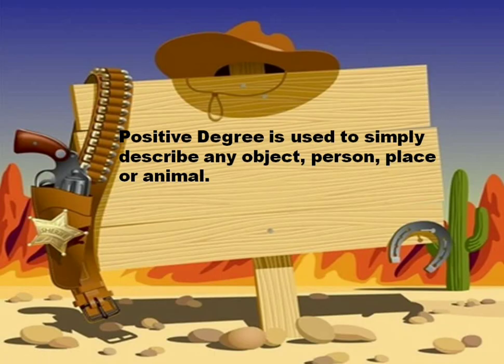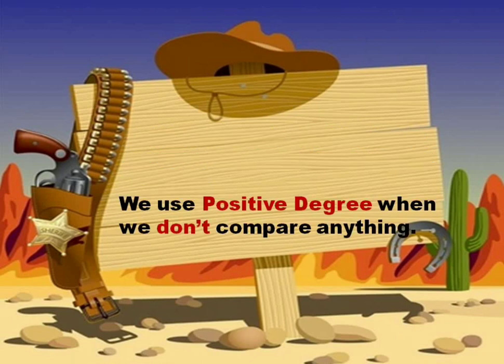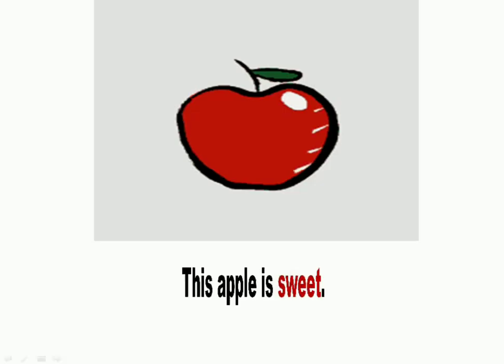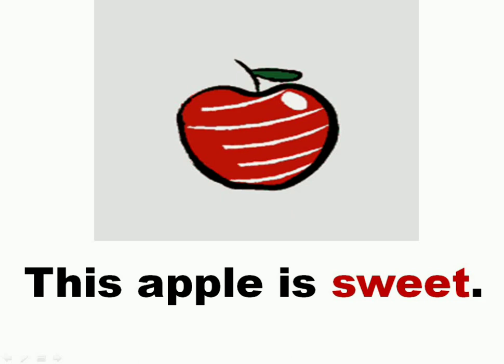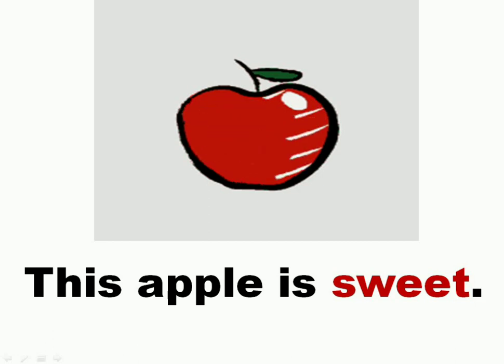Positive degree is used to simply describe any object, person, place, or animal. We use positive degree when we don't compare anything — there is no comparison. When there is no comparison, we use the positive degree of adjective. For example, look at the apple. This apple is sweet. We are not comparing the apple with anything else, so we have used the positive degree, and that is 'sweet'.